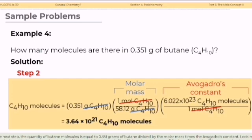For the next step, or step 2, the quantity of butene molecules is equal to 0.351 grams of butene divided by the molar mass times the Avogadro's constant. Looking at the solution, only the number of molecules of butene is left as the unit. By simplifying gives the answer of 3.64 times 10 raised to the power of 21 butene molecules.